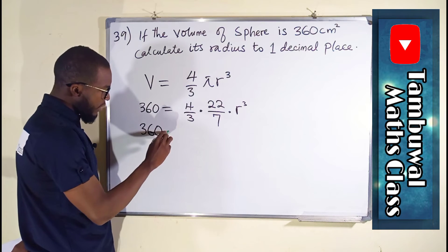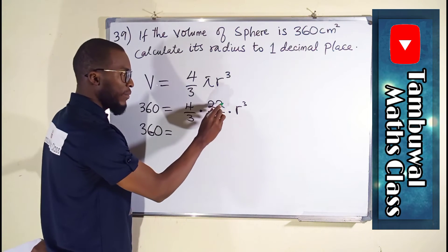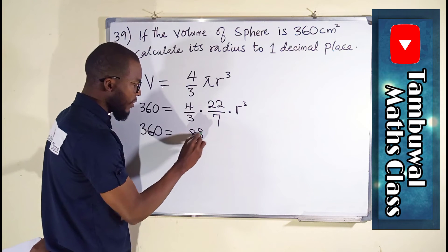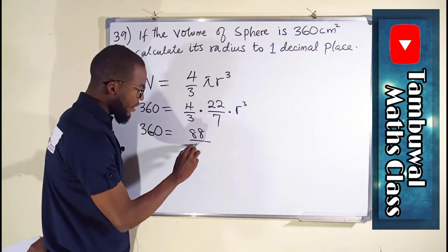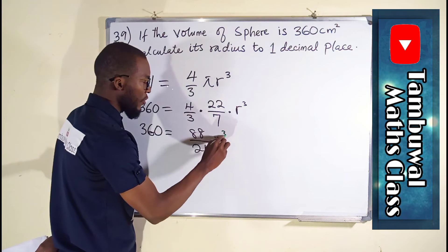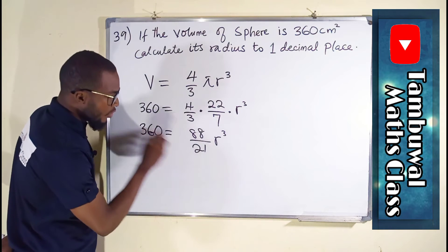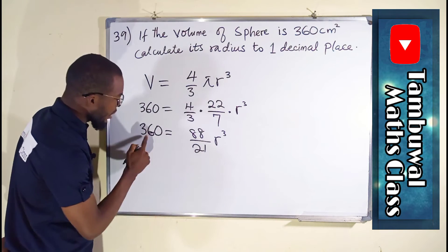360 = 4 × 22 is 88, 3 × 7 is 21, giving us r³. We can cross-multiply: 21 times this...